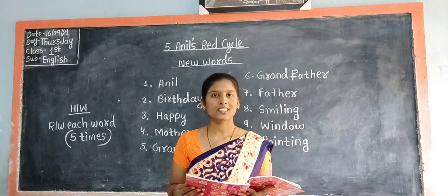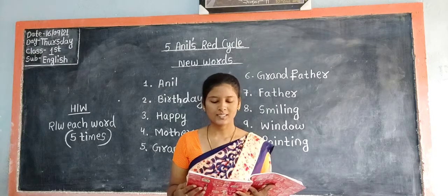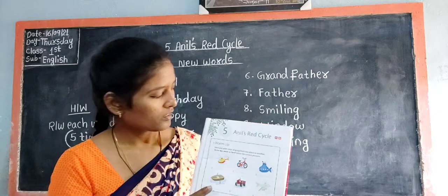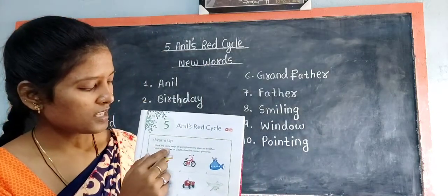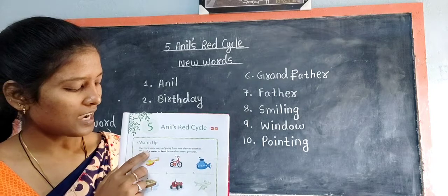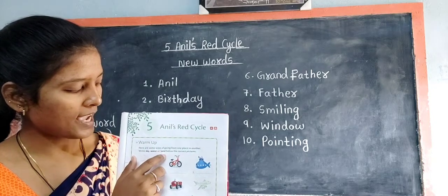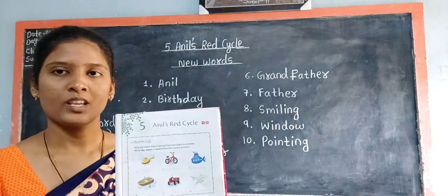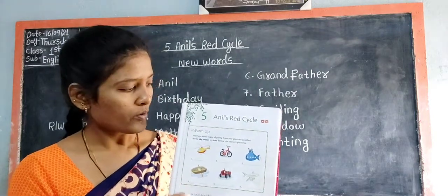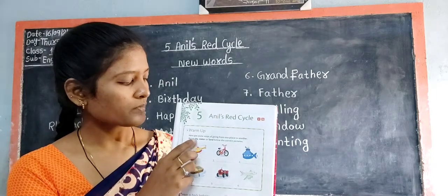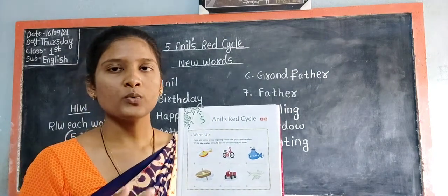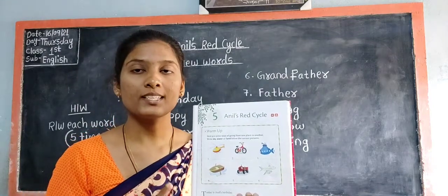The name of the fifth lesson is 'A Red Cycle.' Here they have given one warm-up activity for you. Here are some ways of going from one place to another. Write sky, water, or land below the correct pictures. We have to identify these pictures and then write the correct options — sky, water, or land — below the pictures, based on which way these vehicles move.